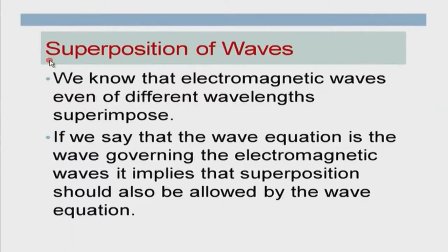That is about the superposition of waves. Whenever we are talking of an interference pattern, we are talking of two waves which come and superimpose on each other, and that is why there is interference — either destructive or constructive. Essentially, when we are trying to make a wave packet, we are trying to take a large number of ideal waves and superimpose them, and that eventually leads to a wave packet.